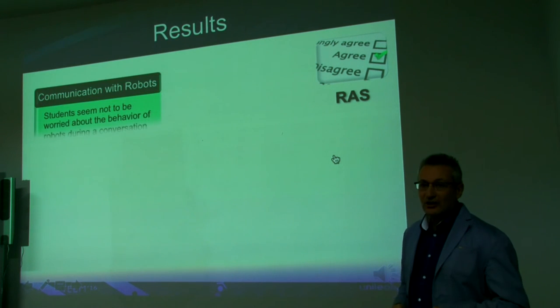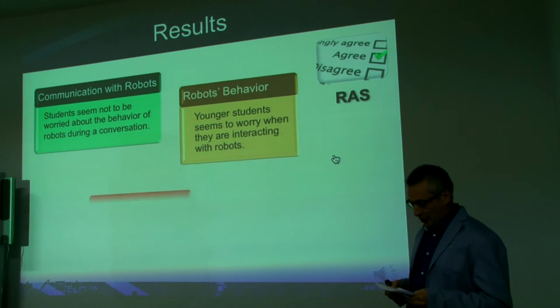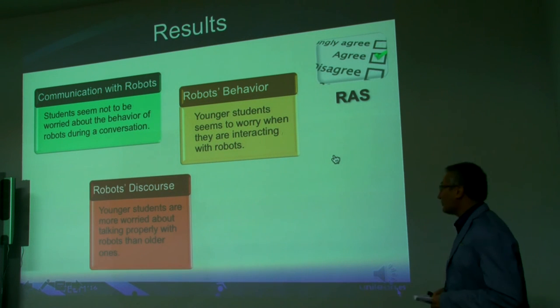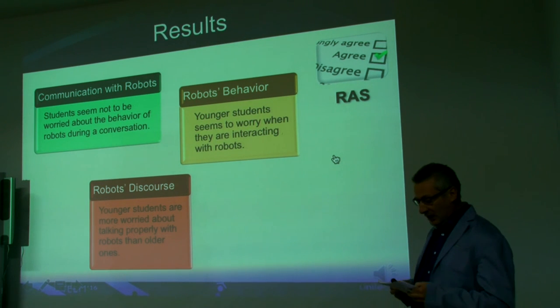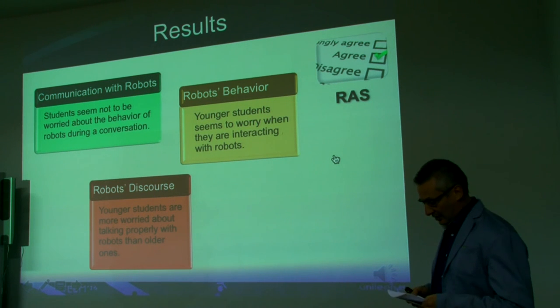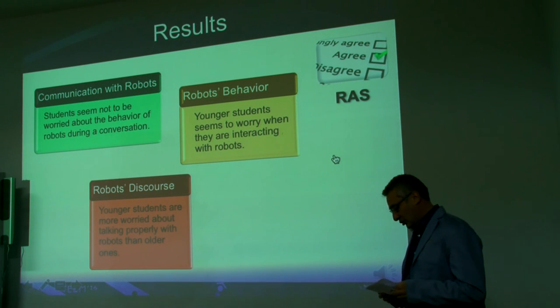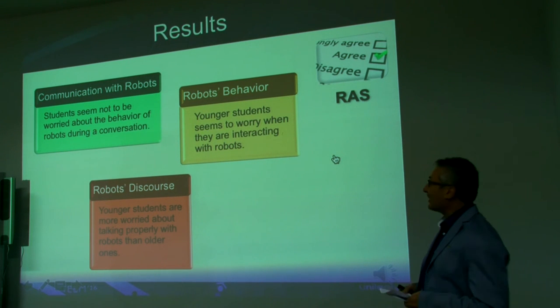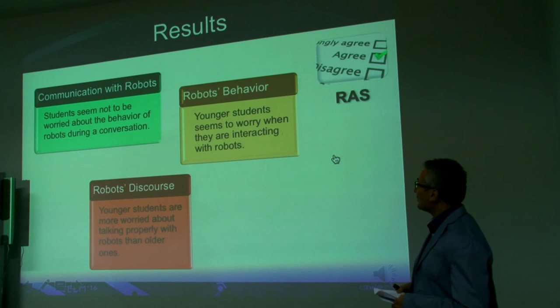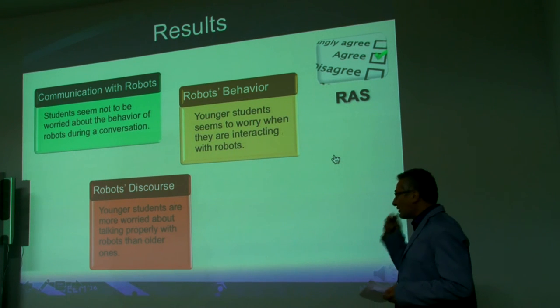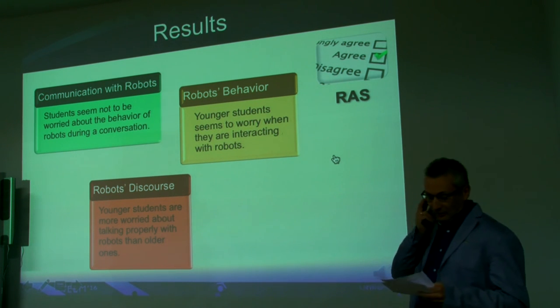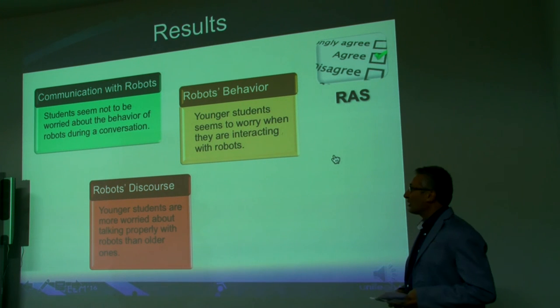The result about the RAS questionnaire, about the communication with robots, shows that the students should not be worried about the behavior of robots during a conversation. About robot behavior and how robots move, how strong they are, or what they are going to do when you are interacting with them seems to worry younger students. Finally, about robot discourse, it is possible to see that younger students are more worried about talking properly with robots than older ones.